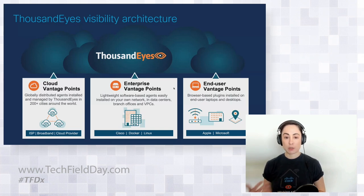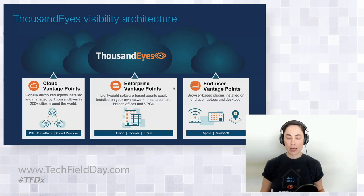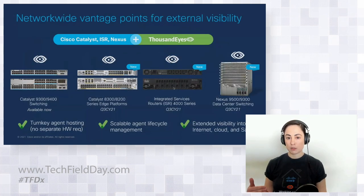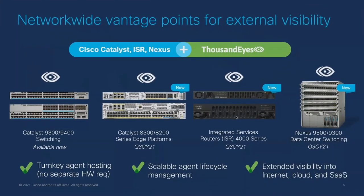In the middle are vantage points designed to be deployed by enterprises within their own environments — environments that they manage. It's a lightweight software-based agent that can deploy in a variety of form factors, such as a cloud VPC, on-prem, branch office, or data center. When you're looking to get visibility at scale with a lot of sites, it can be a challenge in terms of both hosting and agent management. The idea with this recent announcement is that we're making ThousandEyes vantage points effectively ubiquitous throughout Cisco network platforms.